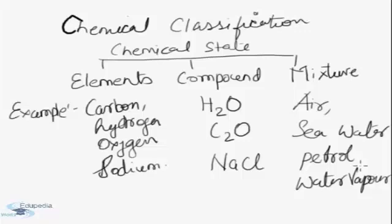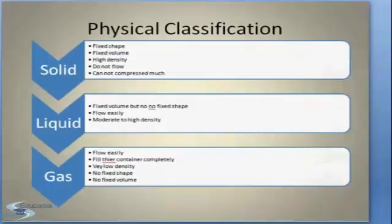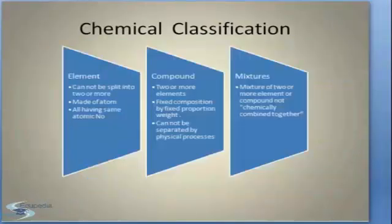Now let's conclude the topic. The chemical classification: elements that cannot be split into two or more. They are made of atoms and having the same atomic number. In compound, two or more elements are forming a compound. They have a fixed composition by fixed proportion weight and they cannot be separated by physical processes. Now let's see the mixtures. Mixtures are two or more elements or compounds. They are not chemically combined together.